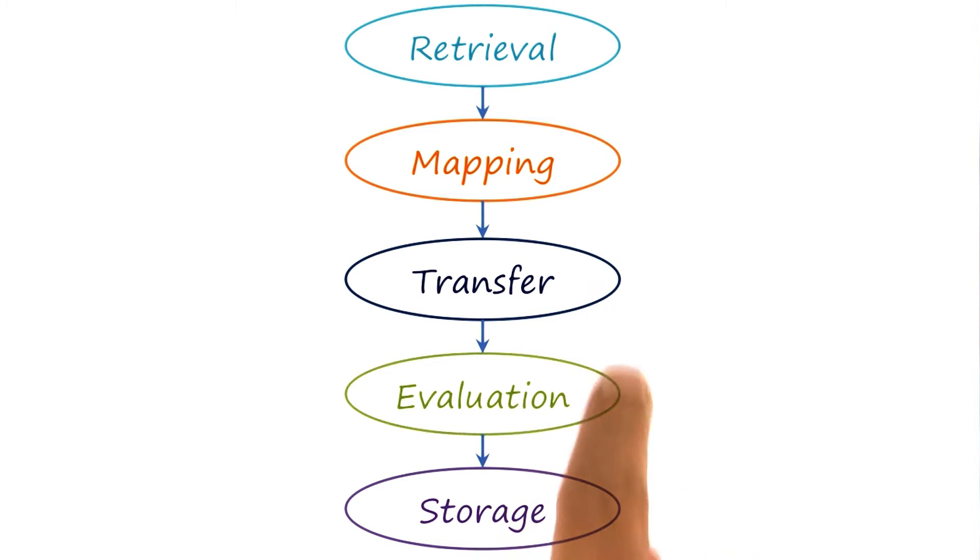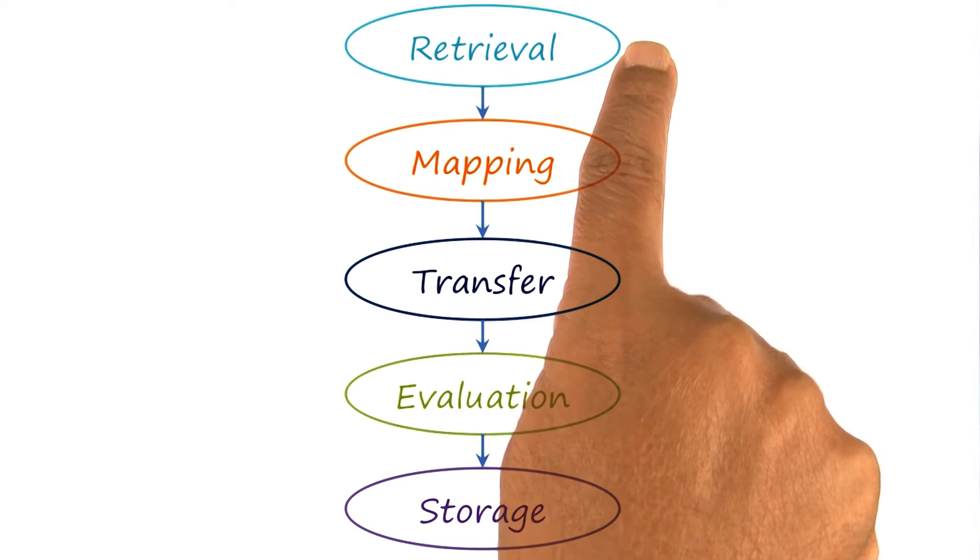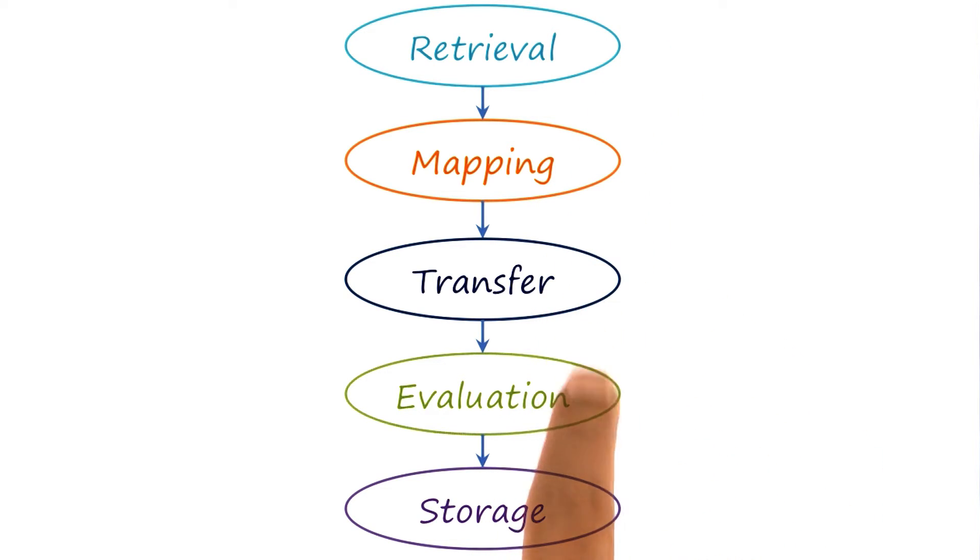A high-level process for analogical reasoning is shown here. It consists of five major phases: retrieval, mapping, transfer, evaluation, and storage. We'll discuss all five stages in detail.